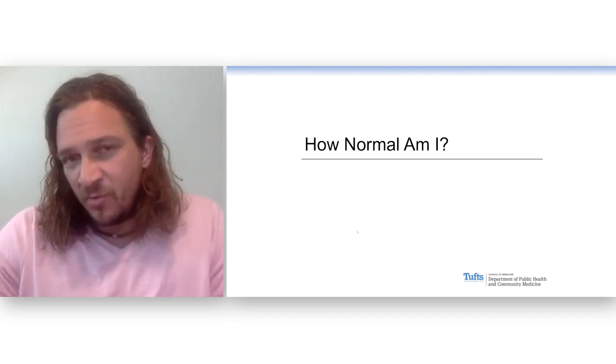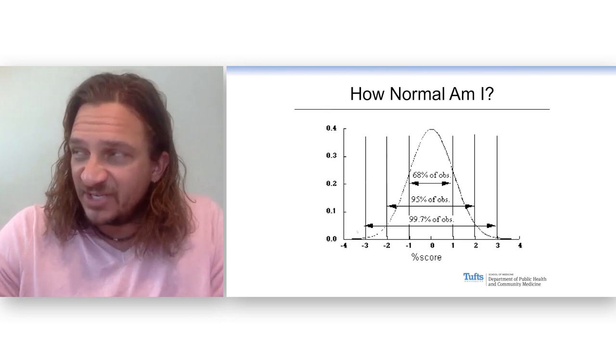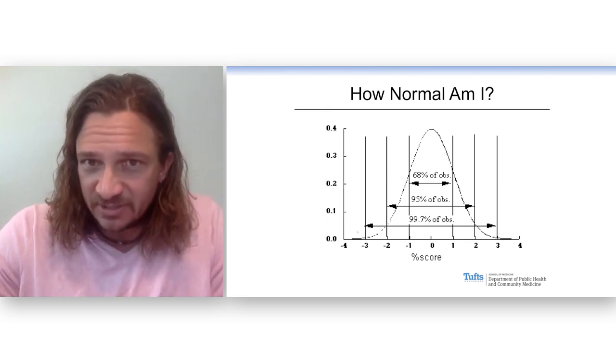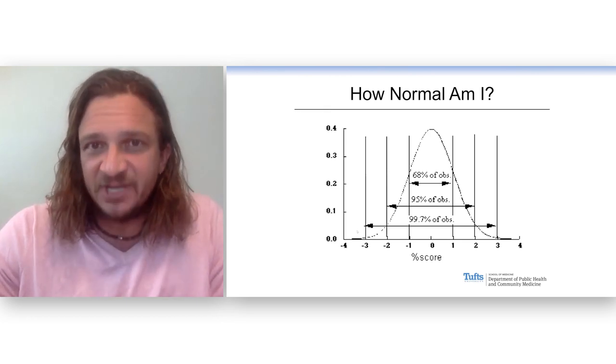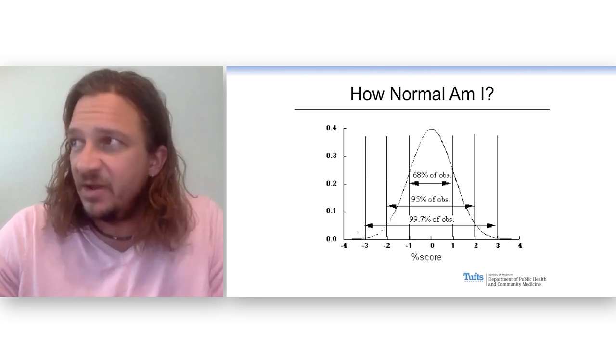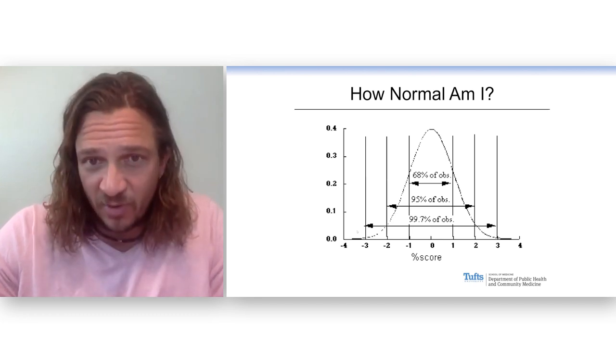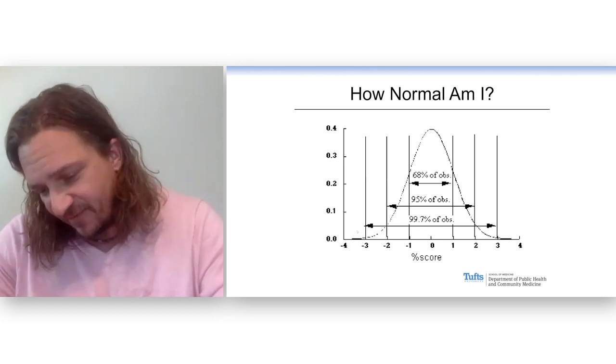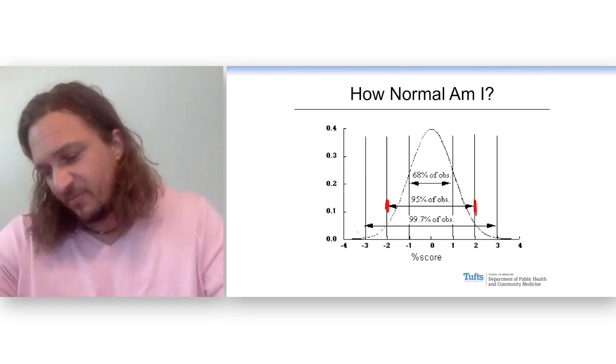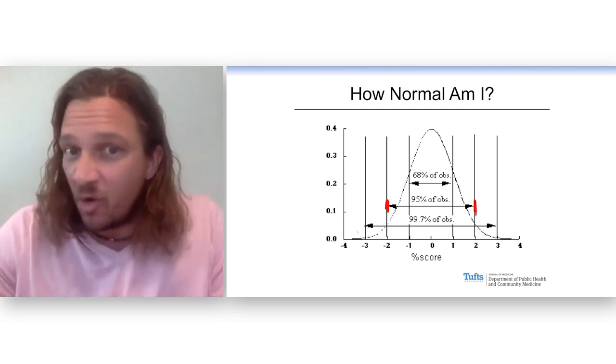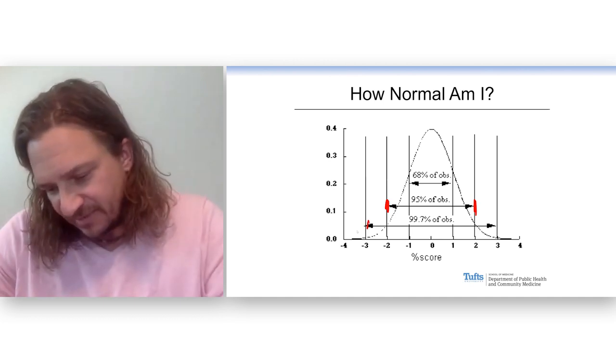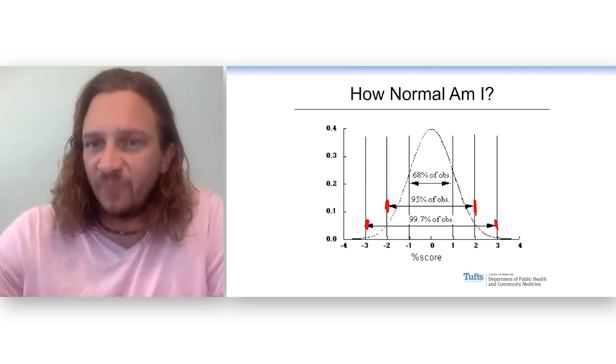Remember that the normal distribution has the following properties. Most of the points, two-thirds or 68%, are within one standard deviation of the mean. Almost all the points are within two, so that's our 95% right here. And then literally almost all, like 99%, are within three.